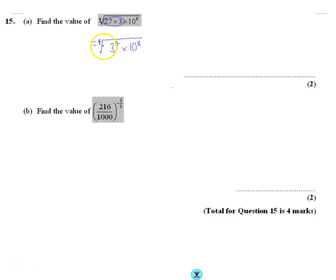Well the fourth root really means that we divide the power by 4 here and the power by 4 here, which just leaves us with 3 and 10 squared. So that's 3 times 100, which is just 300.